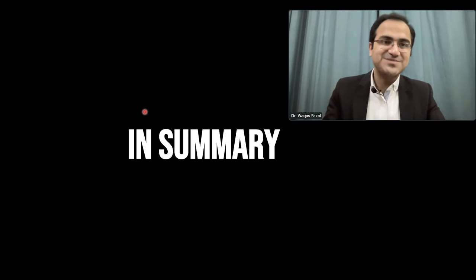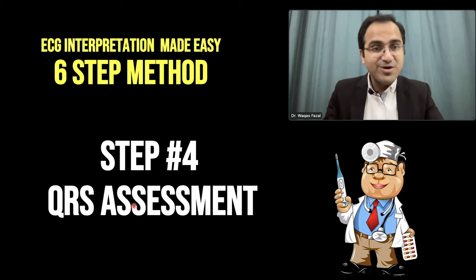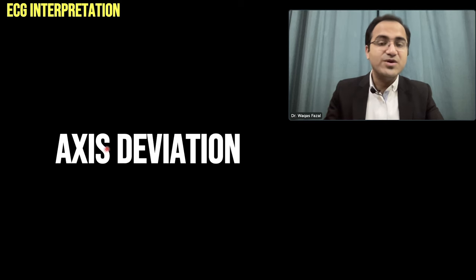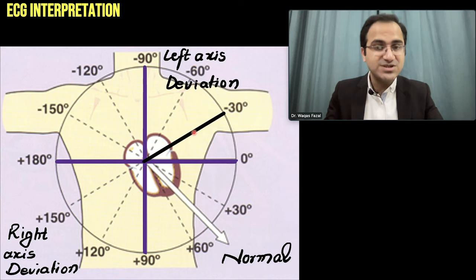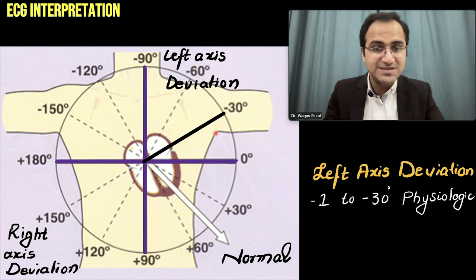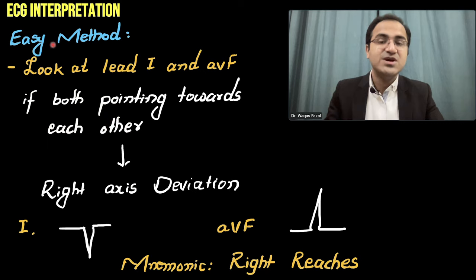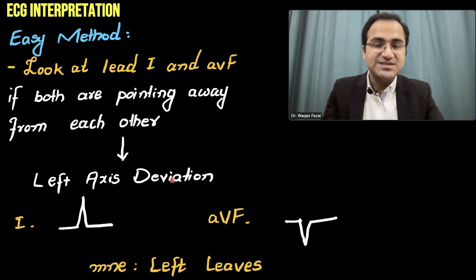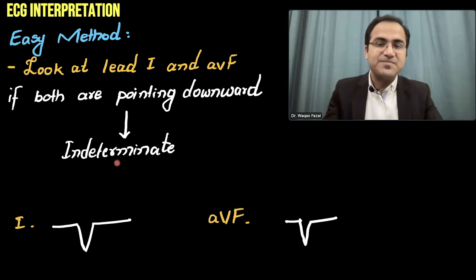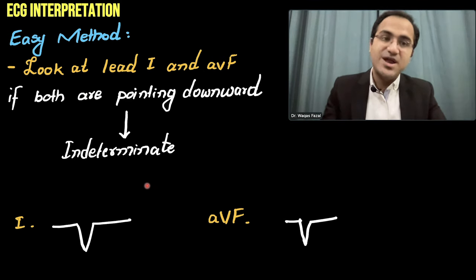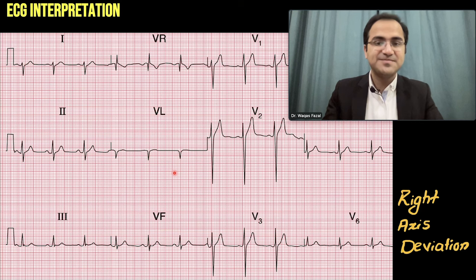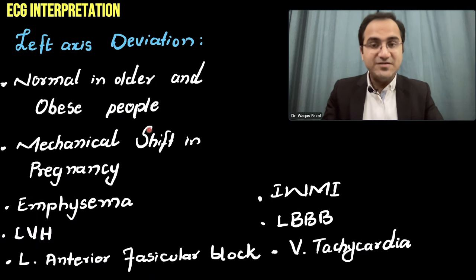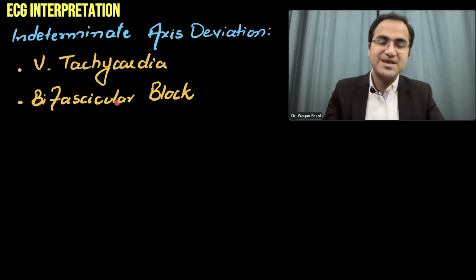In summary, in Step 4 QRS assessment, we talked about axis deviation: what it is, the normal axis, right axis deviation, left axis deviation, and physiologic deviation from 0 to minus 30 degrees. We covered indeterminate axis deviation, also called extreme right axis deviation. The mnemonic: 'Right Reaches' for right axis deviation, 'Left Leaves' for left axis deviation, both downward for indeterminate, both upward for normal. We then practiced ECGs for right and left axis deviation, and reviewed the causes of each. Please subscribe and check out the other videos in this ECG interpretation series.